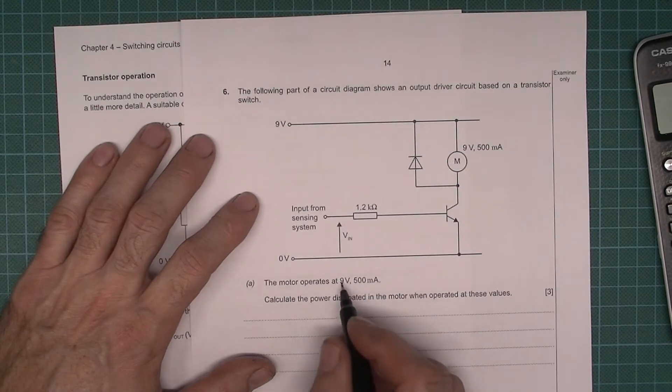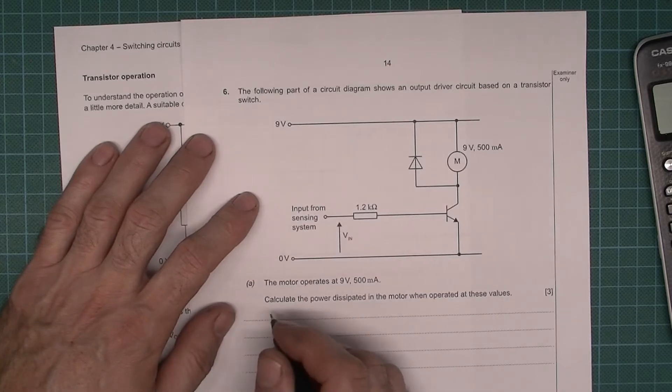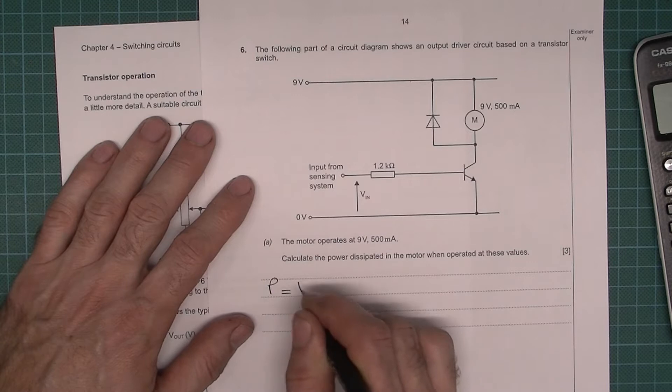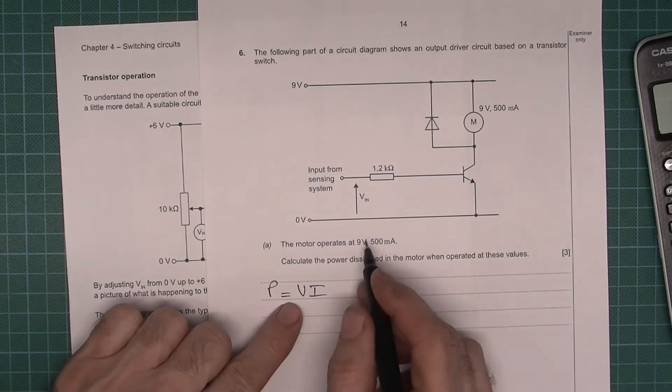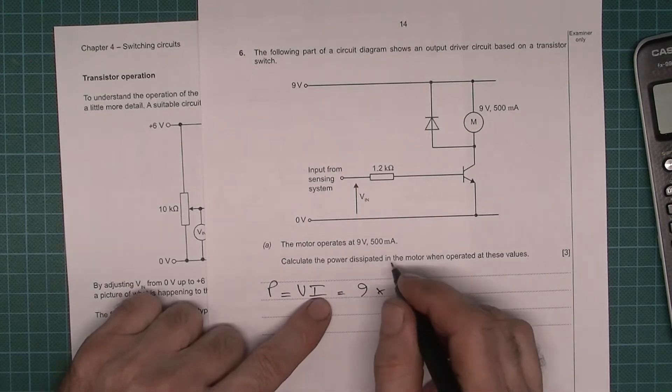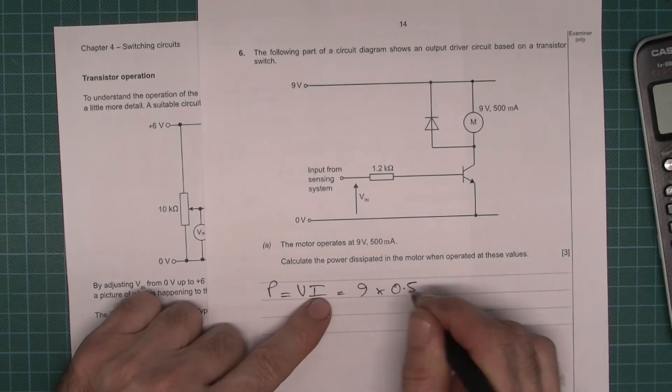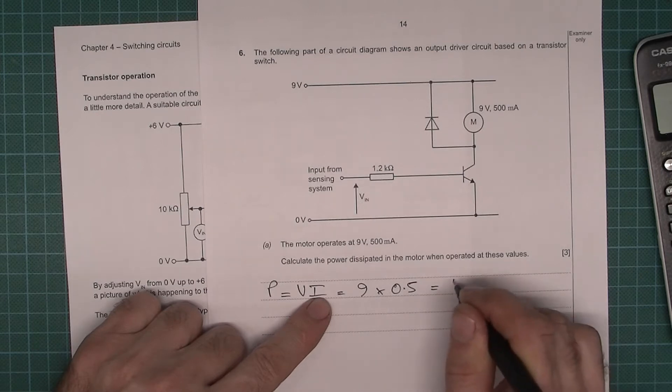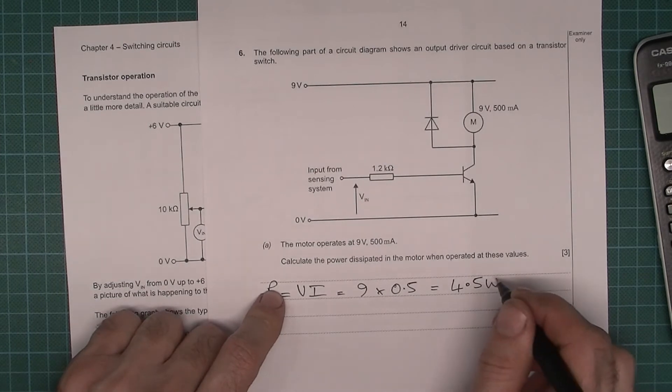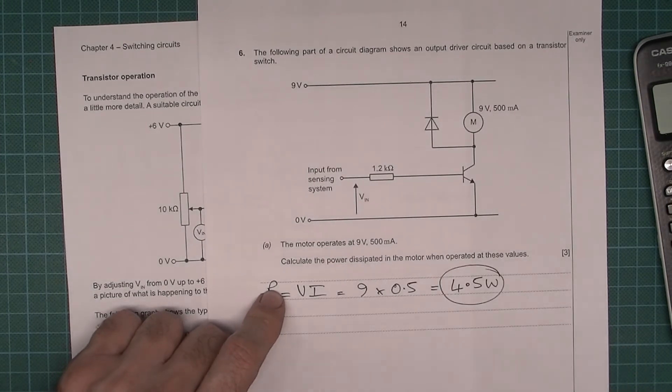Well, because we have those two quantities, it should be easy to do. You need to remember this formula: power equals VI, so the voltage 9 volts, the current is 500 milliamps. I'm just going to write that as 0.5 amps, so that's 4.5, and power is measured in watts, so make sure you write W there, capital W, and then that's your answer.